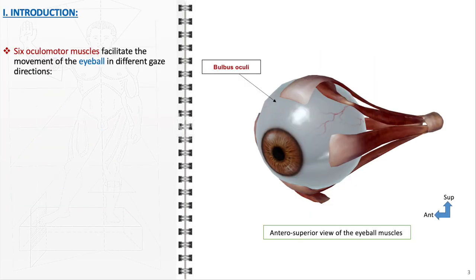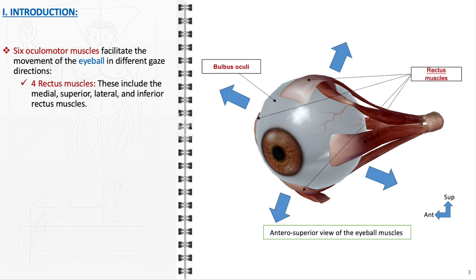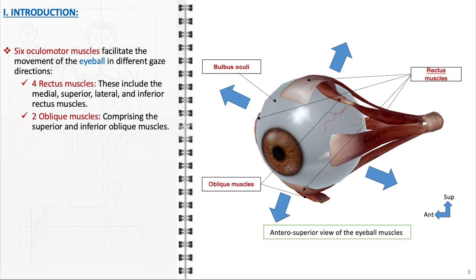The term extraocular muscles refers to the group of muscles located outside the eyeball that control its movements. These muscles are vital for directing gaze and are involved in complex eye movements such as saccades, smooth pursuit, and vergence. The extraocular muscles consist of six main muscles: four rectus muscles — the medial, superior, lateral, and inferior rectus muscles — and two oblique muscles, the superior and inferior oblique muscles.